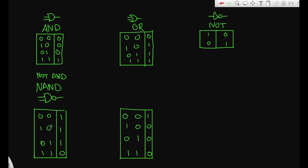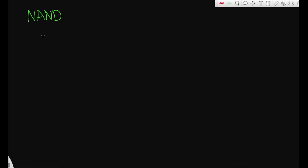Now I'm going to show you how we make this circuit in a little bit. But this one is a NOT OR gate — or NOR gate. When you apply a NOT gate to an OR gate, you just put a little bubble at the end. And this is the truth table for NOR.